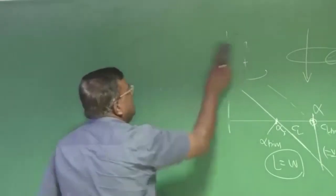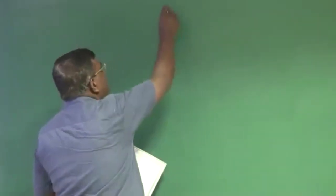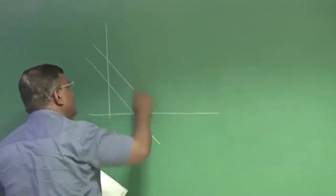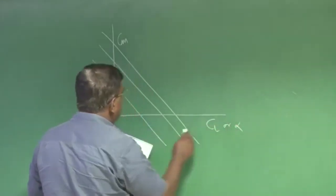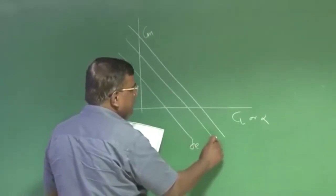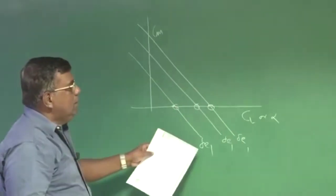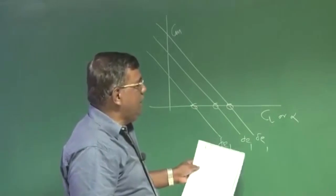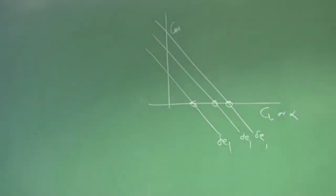To understand this, we will have slight revision of one of the problems which we have done in our stability classes, in earlier courses. And before that, let us summarize what we are talking about: I can trim the airplane at different CL or alpha and for different delta E, different delta E requirements will be there if you want to trim it here, here or here. And the question is, is my elevator powerful enough to generate or trim the airplane?